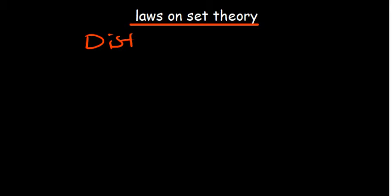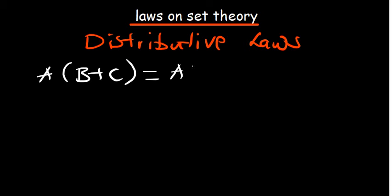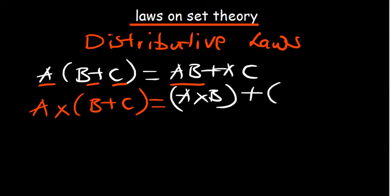To understand distributive laws, think about multiplication: A times (B + C) is the same as AB + AC, meaning you multiply A with each term inside the brackets. Distributive laws are different from associative laws because you work with different signs — mixing intersection and union.